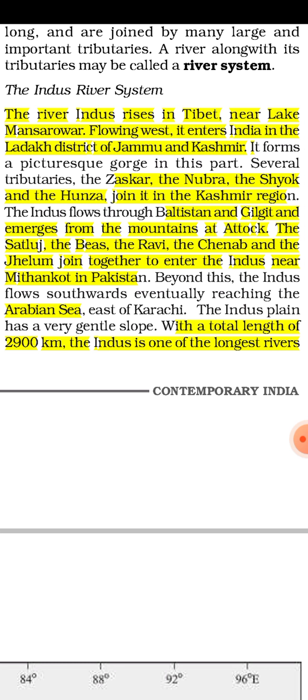The Indus river also has tributaries. When streams or channels merge with the main river, we call them tributaries. The tributaries of the Indus river from the Kashmir region are Zaskar, Nubra, Shyok, and Hunza. These are specifically the tributaries of the Indus river from the Kashmir region.